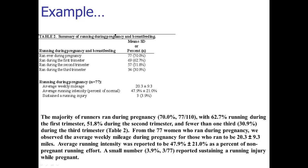Notice the wordiness in that last sentence — 'women who ran during pregnancy, for those who ran to be' — there's a lot of repetition. Hopefully you want to get out your red pen and make it more concise. The paragraph continued with average running intensity at 47.9% of non-pregnant effort, and a small number reported sustaining a running injury while pregnant. The author literally read right through the table — the reader doesn't need that.